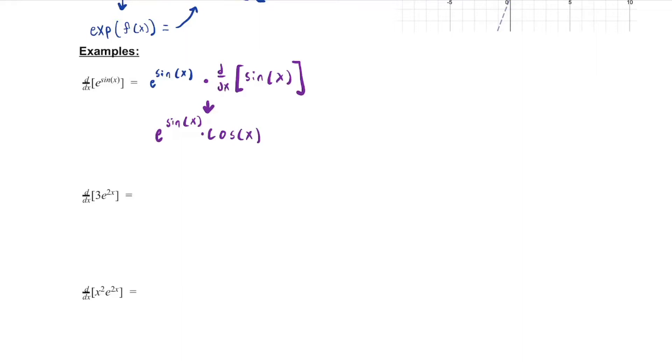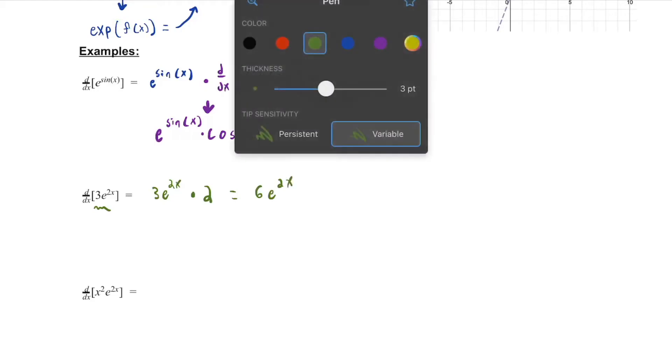Right? So if we had 3e to the 2x, my derivative would be 3e to the 2x times the derivative of 2x, which is just 2. So putting it together, we'd have 6e to the 2x.